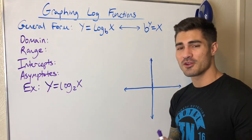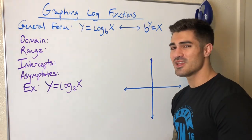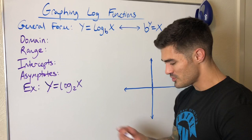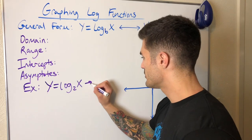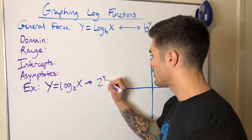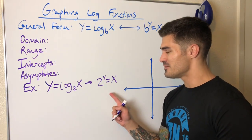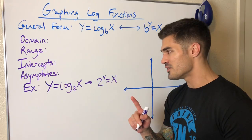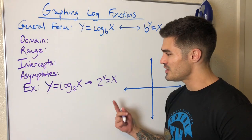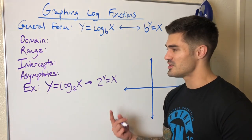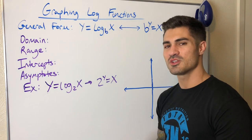This will look familiar if you know how to graph exponential functions, because we can rewrite a logarithm in its exponential form — something we already know how to graph. There's only one main difference. Let's rewrite log base 2 of x in exponential form: 2 to the y equals x. This is almost exactly what I graphed in the exponential functions video, except the x and y are flipped — because logarithms and exponential functions are inverses of each other.